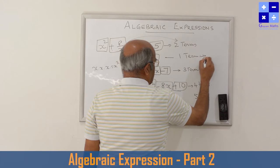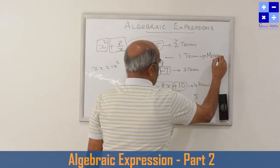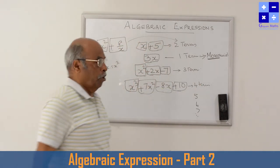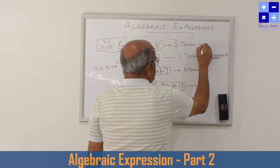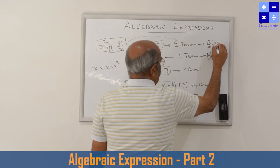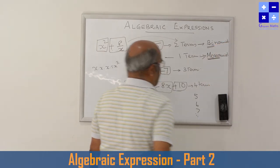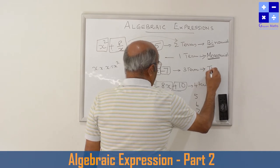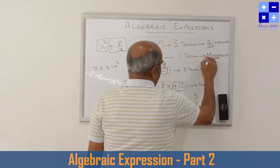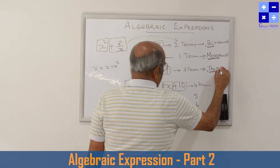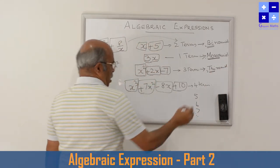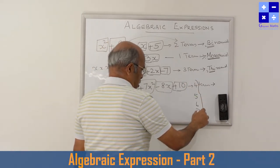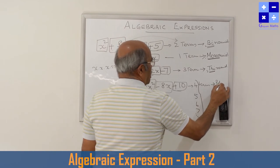Now we give different names according to the number of terms. An algebraic expression having only one term is known as a monomial — 'mono' means one. An algebraic expression having two terms is known as a binomial — 'bi' means two. An expression with three terms is known as a trinomial — 'tri' means three.